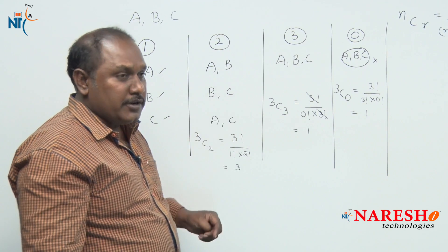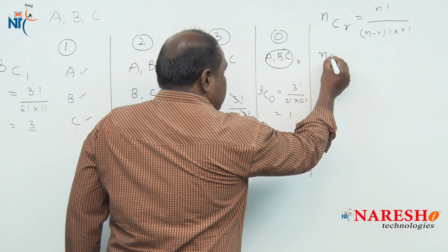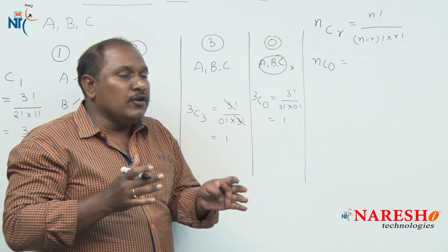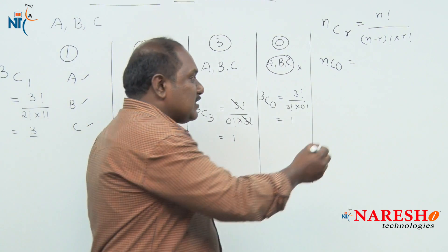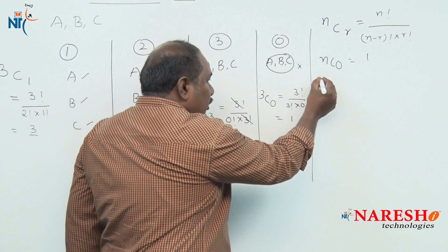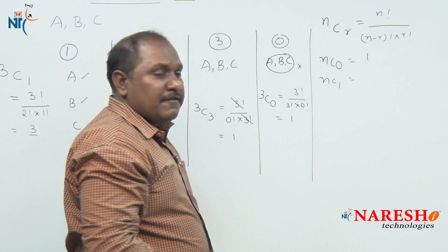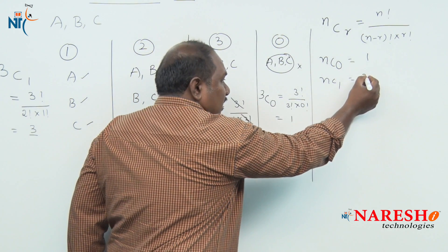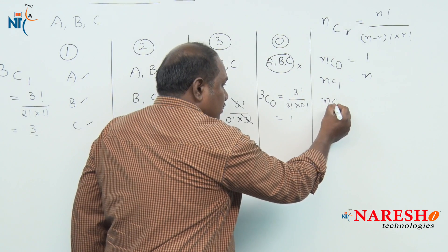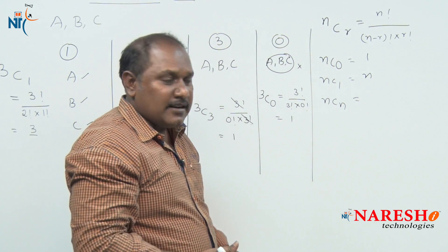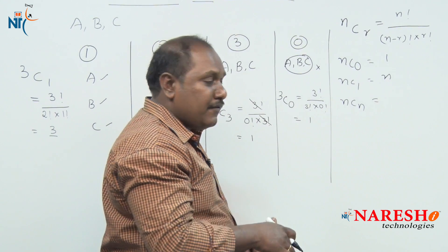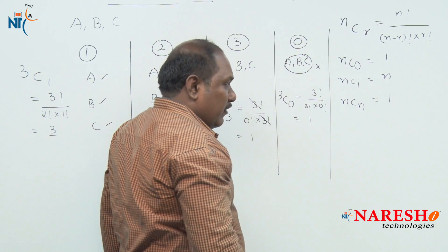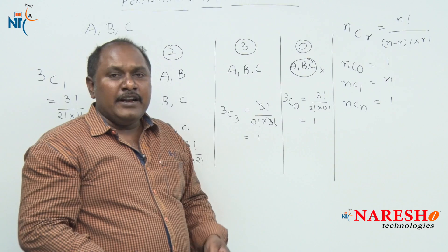Now let us look at some basic points. What is the value of nC0? That means out of n different things we do not select anything, and it is done in 1 way. What is nC1? Selecting 1 out of n different things, done in n ways. What is nCn? Selecting all n things out of n different things, and it is done in 1 way. These are some points we need to remember.